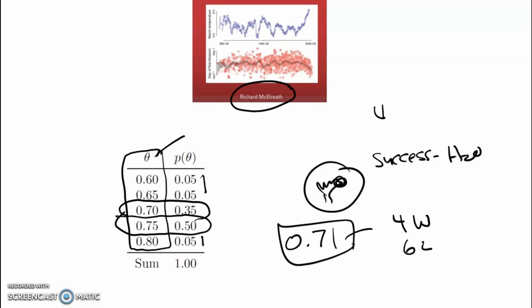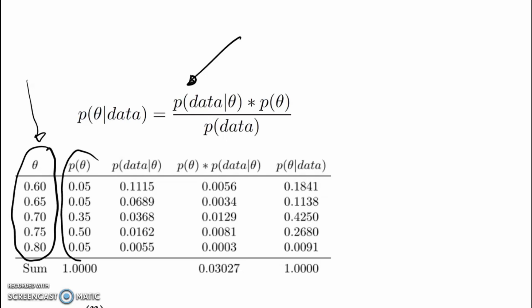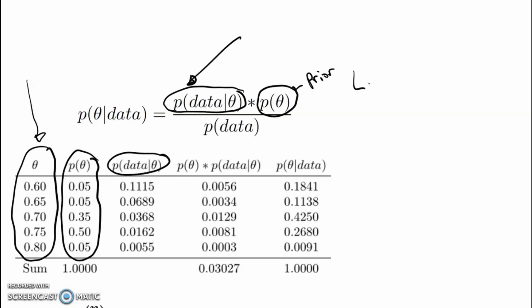Now let's use that to get a good understanding of Bayes theorem. This is without doubt the most important formula of the workshop, and this really is the most important table — the most important figure in the workshop — so it's really worth spending some time trying to get your head around it. We have five and only five possible values of theta, and we've assigned the prior probability associated with each of those. So there is our prior. Then what we're going to calculate is the probability of data given theta — the likelihood function.